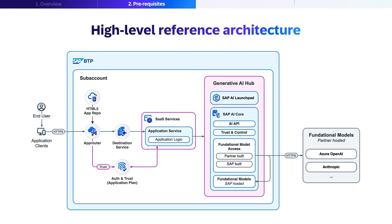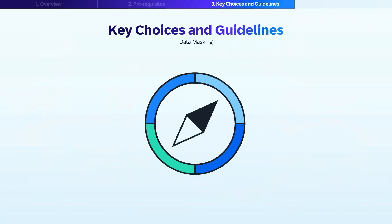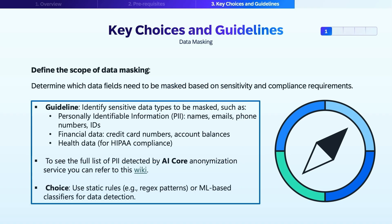The generative AI hub is the central component of this architecture and contains two key elements. First, SAP AI Launchpad for management and monitoring. Second, SAP AI Core, which provides several critical functions: AI APIs for programmatic access, trust and control mechanisms, and foundational model access. The foundational model access component can connect to both partner-built and SAP-built models. SAP AI Core can access both SAP-hosted foundational models within the platform and partner-hosted models like Azure OpenAI through secure HTTPS connections. This architecture ensures secure, controlled, and efficient access to AI capabilities while maintaining integration with the broader SAP ecosystem.